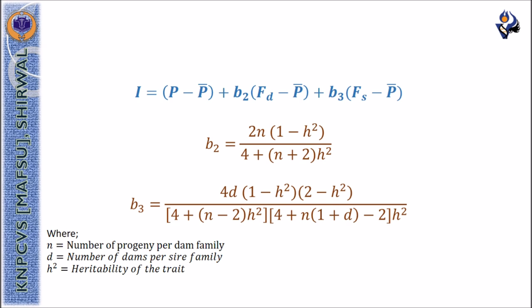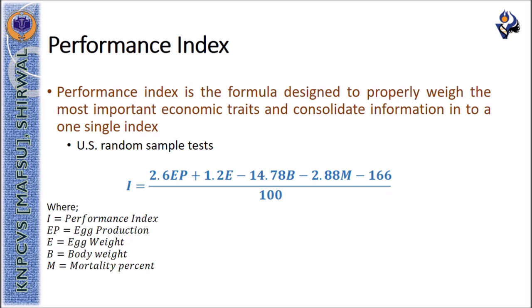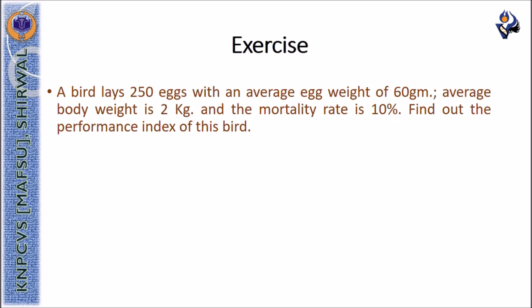The performance index of birds is calculated with the help of US Random Sample Test with the formula 2.6EP plus 1.2E minus 14.78B minus 2.88M minus 166 divided by 100, where EP is the egg production, E is the egg weight, B is the body weight, and M is the mortality percent. Based on this you have an exercise that a bird lays 250 eggs with an average egg weight of 60 grams, average body weight is 2 kilograms, and the mortality rate is 10 percent. Find out the performance index of this bird.